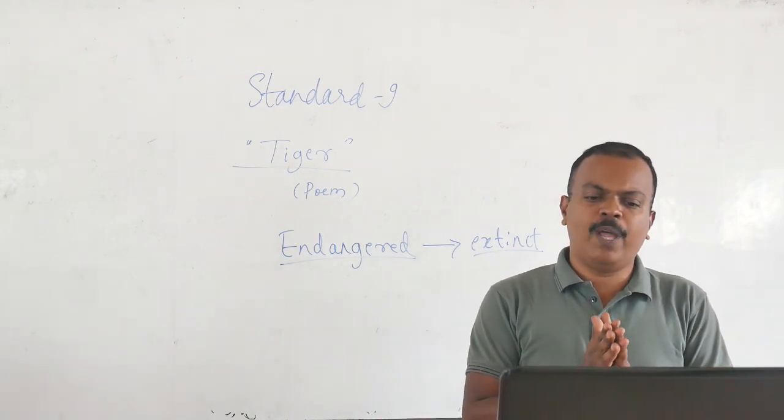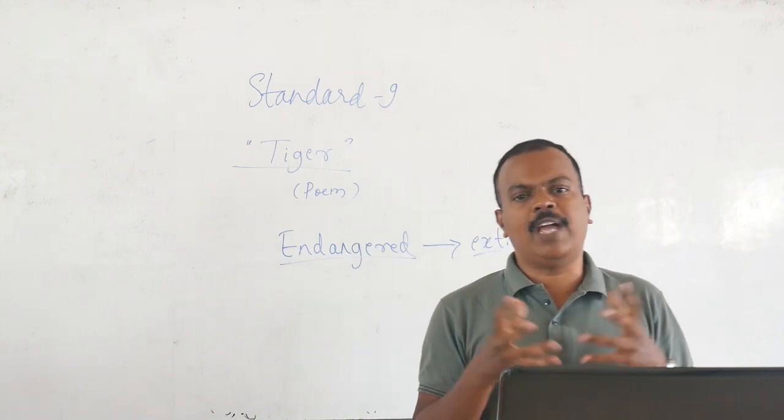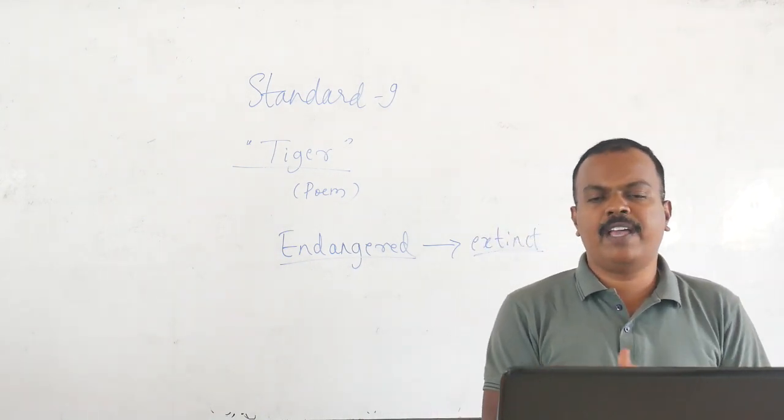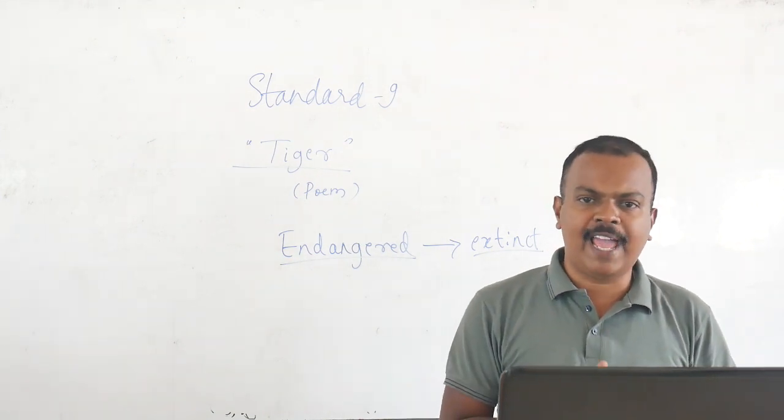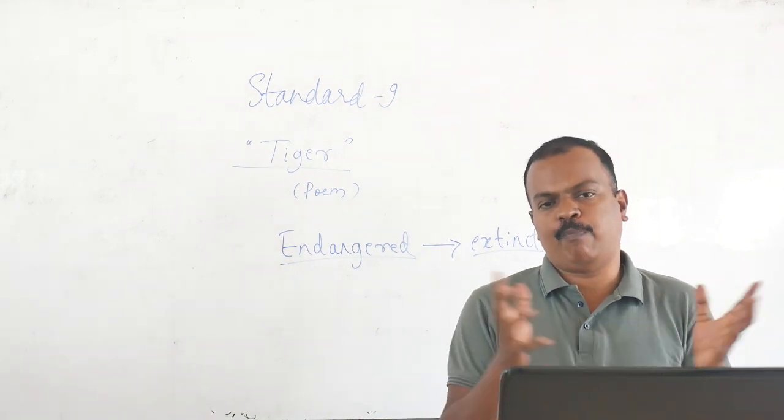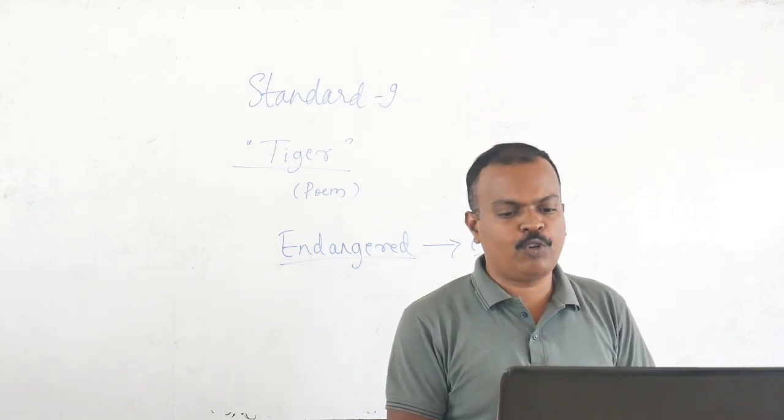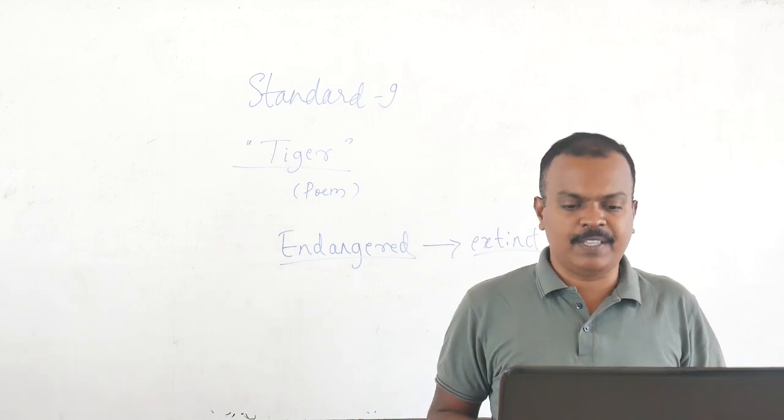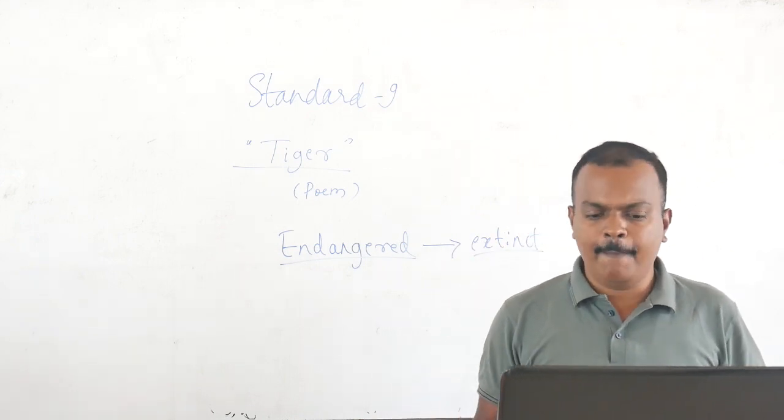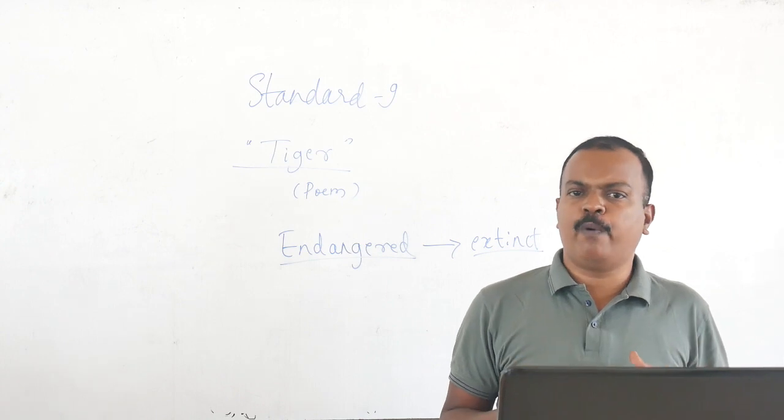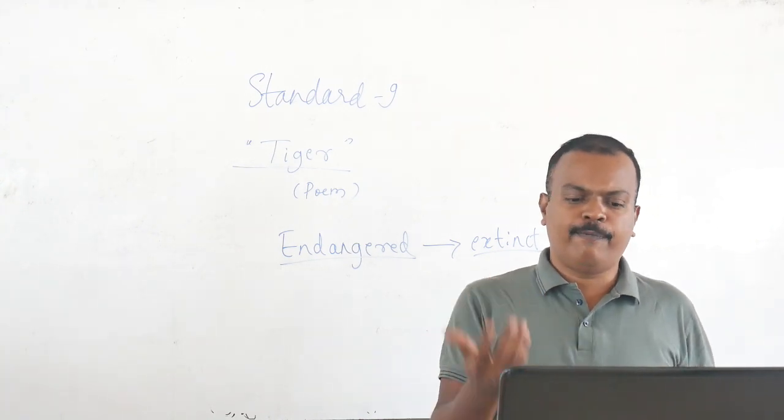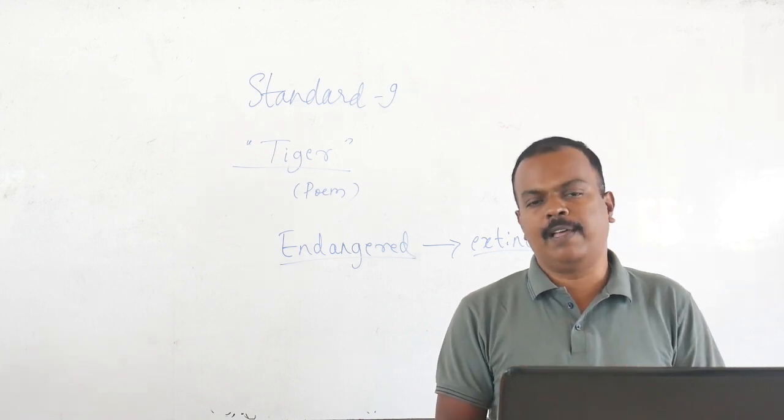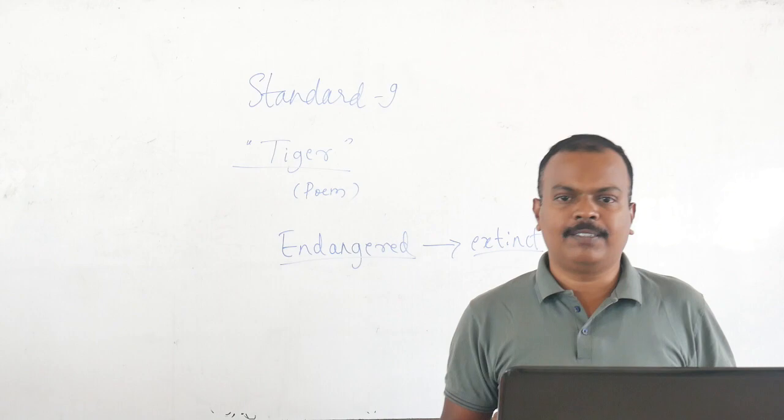So this poem talks about the pitiful condition that tigers are living in the jungles these days. Like I said, there are only about 4,000 tigers remaining alive and it's everybody's responsibility to make sure that that number grows, it increases. With that awareness, we study this poem. And that's all about this poem. Go through it. Find meanings for words that you did not understand. And then we will discuss questions and answers later. So I will see you in the next class.